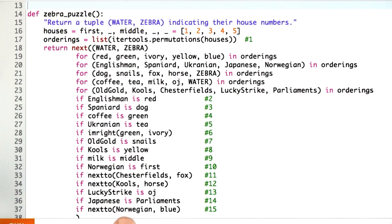Each of the constraints is very easy to state. Englishman is red, the Spaniard is dog, coffee is green, and so on. We have some immediate writes and next to, and that's the whole problem.